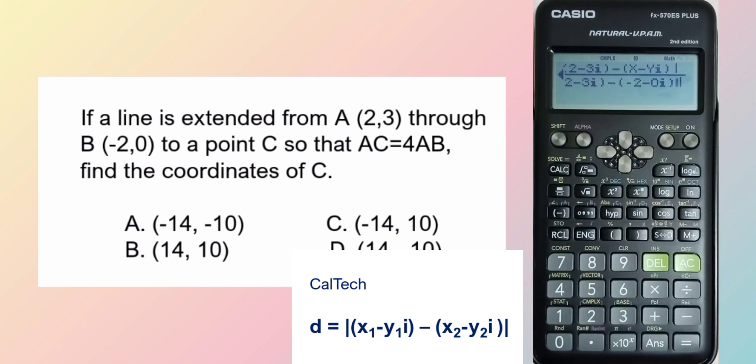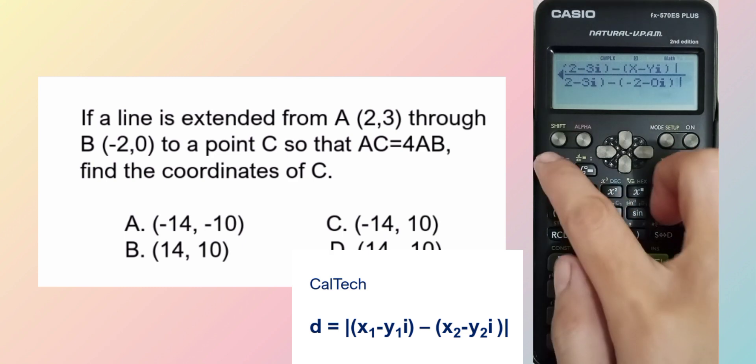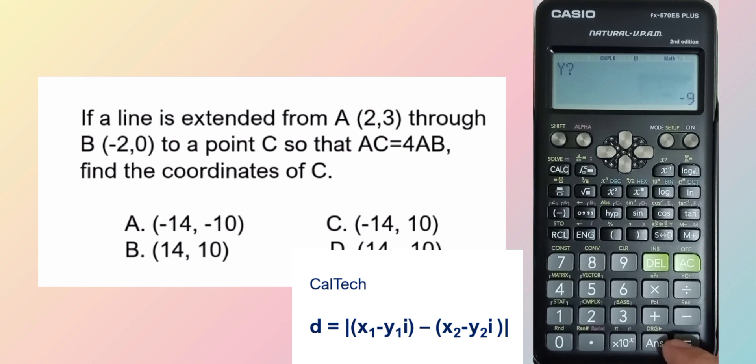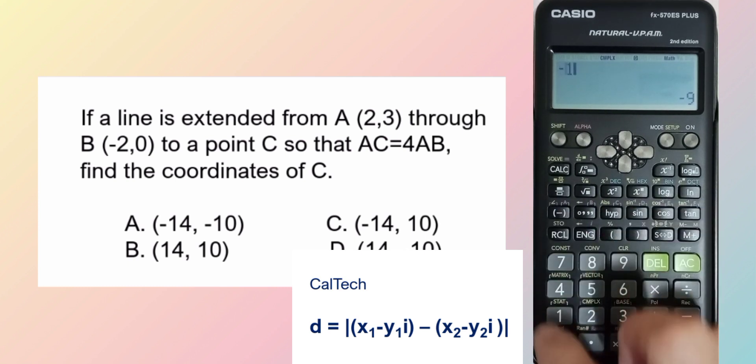So the quotient must be equal to 4 in order to satisfy the given condition. So our point is X is equal to negative 14, and Y is equal to negative 10.